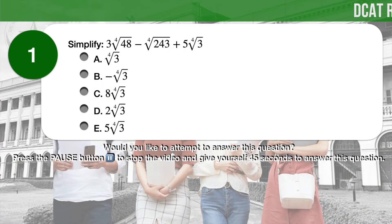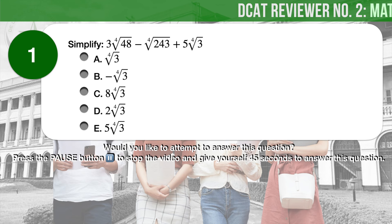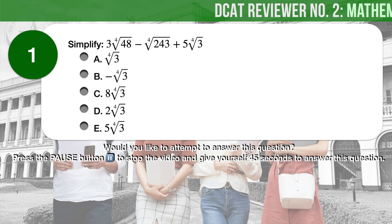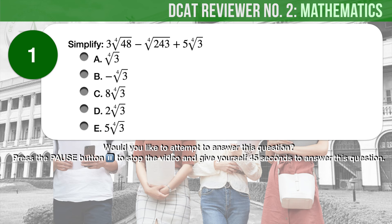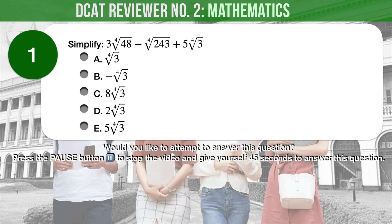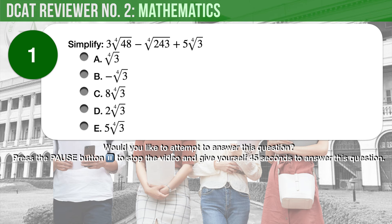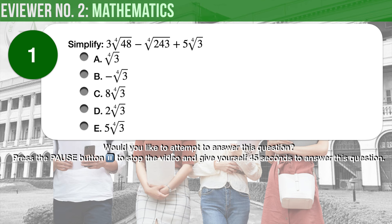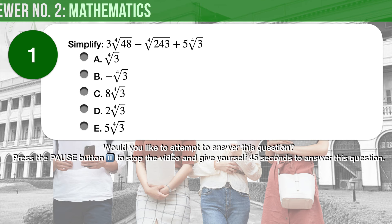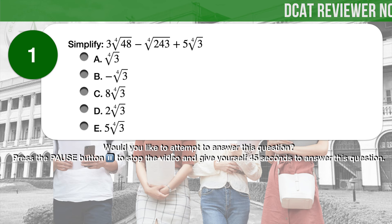Question number 1. Simplify the expression: 3 times the 4th root of 48, minus the 4th root of 243, plus 5 times the 4th root of 3. A. The 4th root of 3. B. Negative the 4th root of 3. C. 8 times the 4th root of 3. D. 2 times the 4th root of 3. E. 5 times the 4th root of 3.